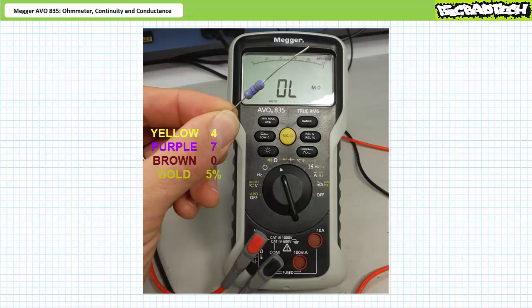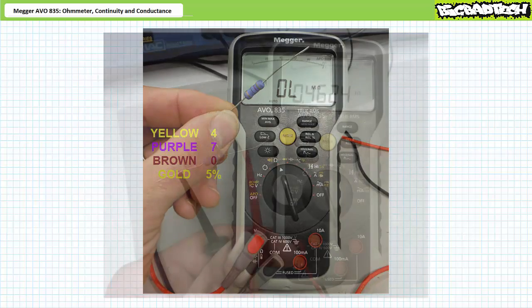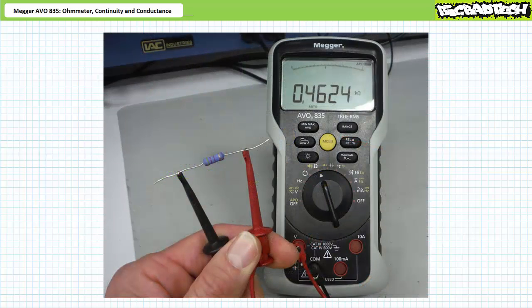If you're tracking, you should obtain the following value. Yellow, purple, brown, gold means four, seven, followed by one zero, meaning this resistor has a nominal or nameplate resistance of 470 ohms plus or minus 5%, meaning it might actually be between 446.5 ohms and up to 493.5 ohms. Let's use the ohmmeter function to test if this resistor is inside its expected tolerance. Once placed between the probes of the ohmmeter, the nominal 470 ohm resistor appears to have a resistance of 0.4624 kiloohms or more appropriately 462.4 ohms. This is inside our expected range.